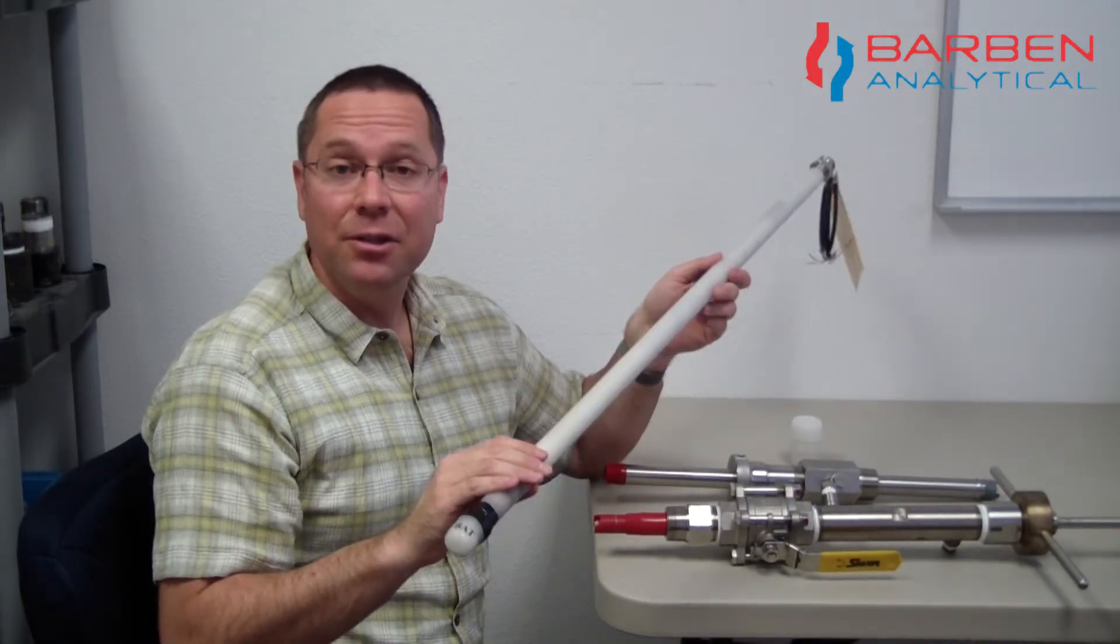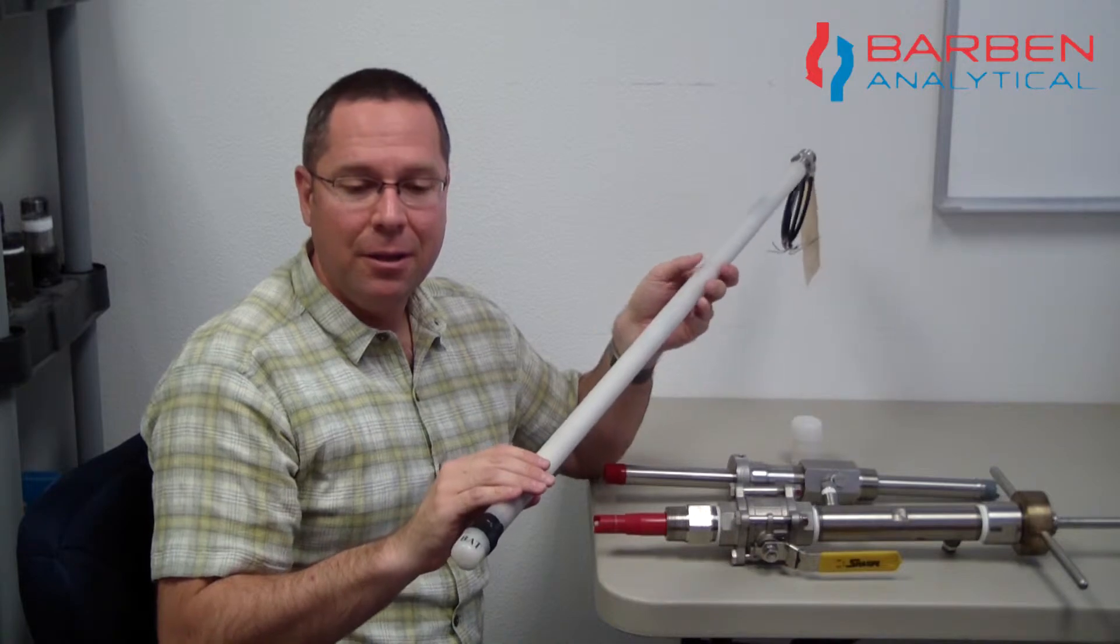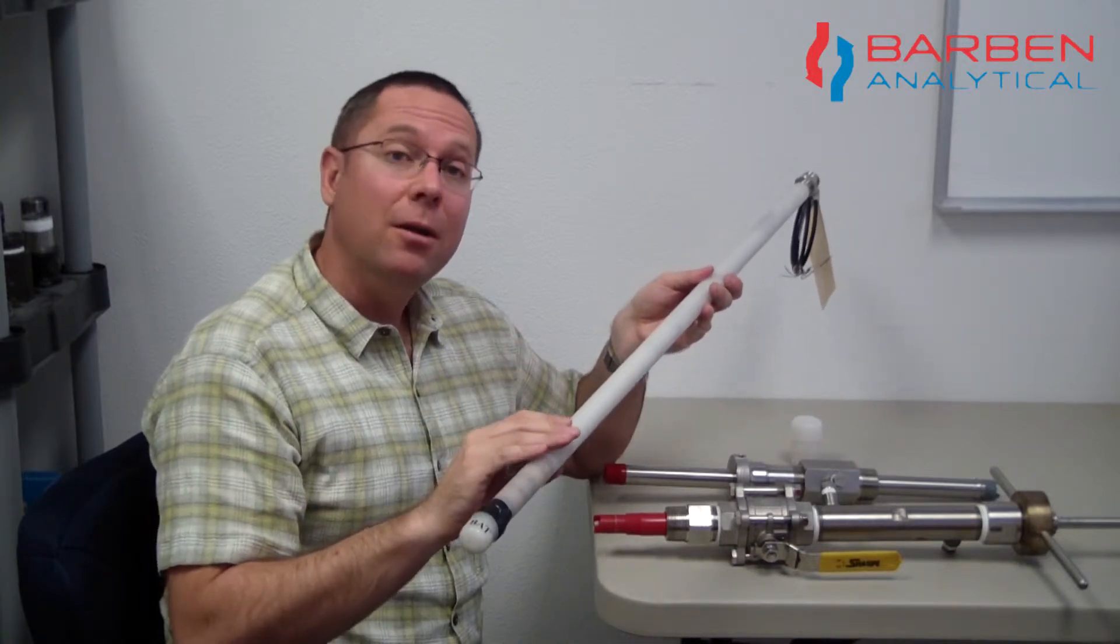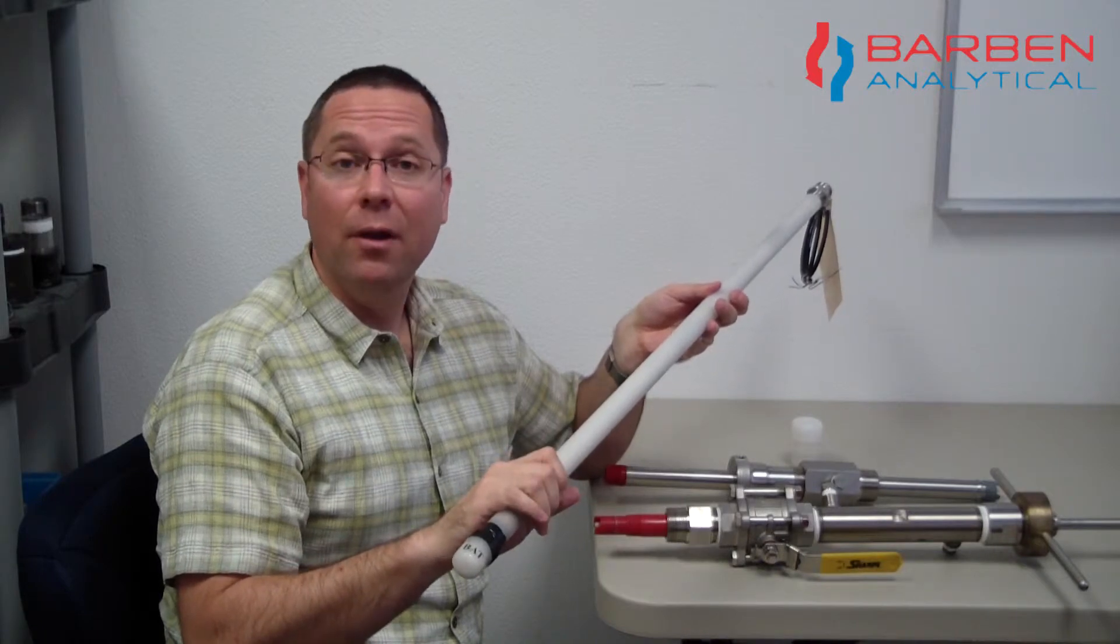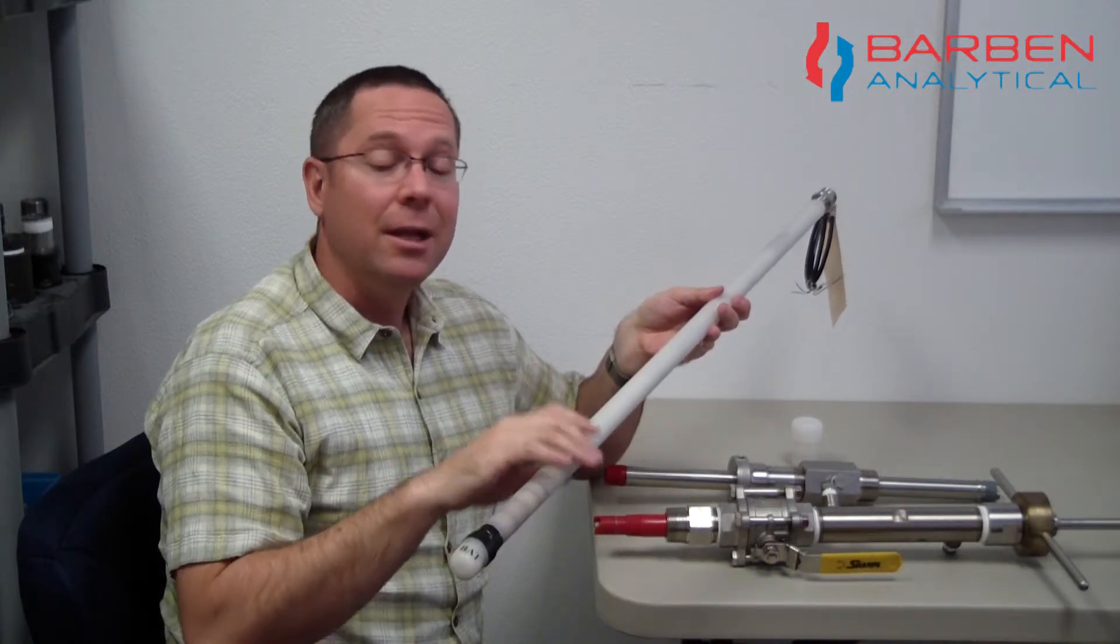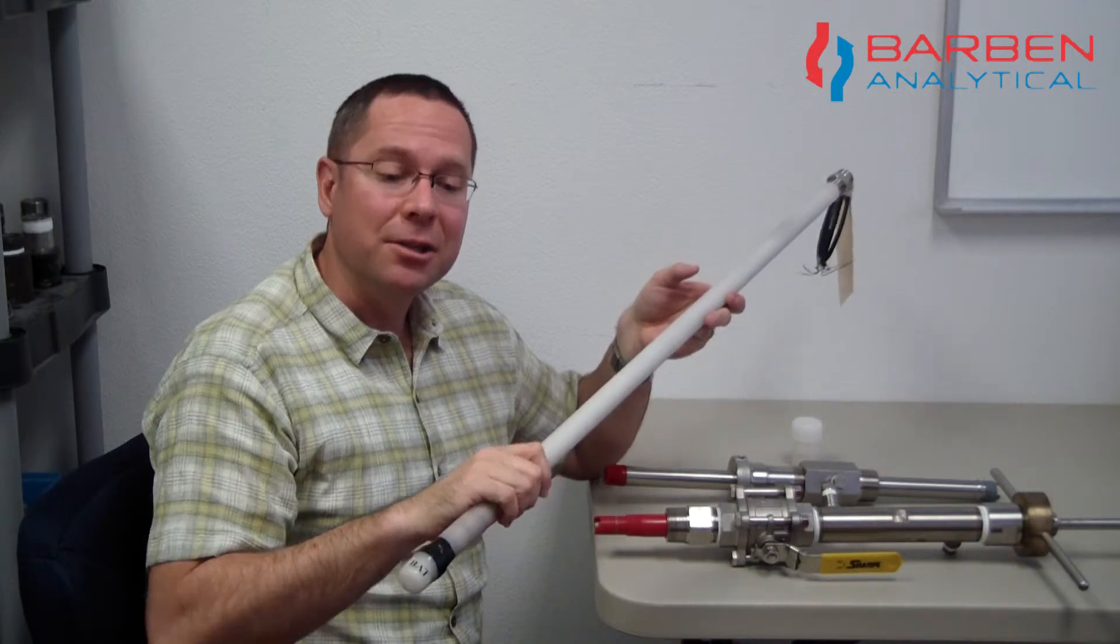The version that you see here, this is our 36 inch length. And Barben can provide all the accessories to help you with the installation including the ball valve, related pipe nipples, and the compression fittings to help you get into the process.